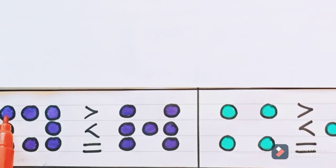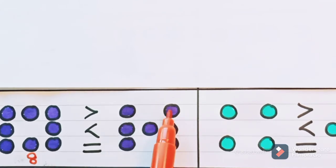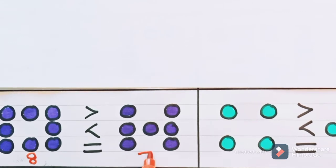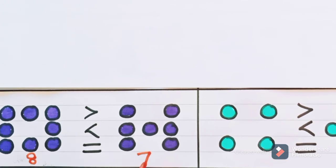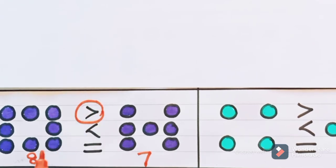Now look at here. One, two, three, four, five, six, seven, eight — there are eight circles. And here one, two, three, four, five, six, seven — there are seven circles. So comparing with the number seven, the number eight is bigger. After seven only eight comes — the number which comes later is the bigger number. So eight is bigger than seven. Eight is the bigger number and seven is the smaller number. For bigger numbers, we use greater than symbol. Eight is greater than seven.